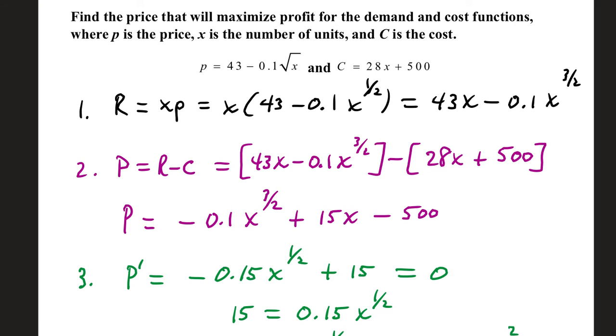To maximize profit, we take the derivative of our profit function. Negative 0.1 times 3 halves is negative 0.15. Take one off our power, that's x to the 1 half. The derivative of 15x is 15. The derivative of any constant is 0. And since we're looking for the number of units to maximize profit, we will solve for x.